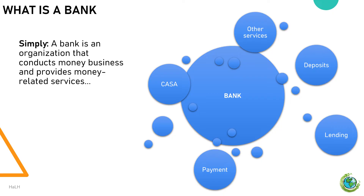Certain banks deal directly with the public and are the only ones a regular person will work with. Other banks deal with investments and international currency trading. It's quite complicated and difficult to remember, right? So let's forget the official theories for now. Simply put, a bank is an organization that conducts money business and provides money-related services — such as CASA for account provision, term deposits for money saving, loans for housing and car purchases, payment services for money transfers between accounts within the same or different banks, and many other services for individual and corporate customers.